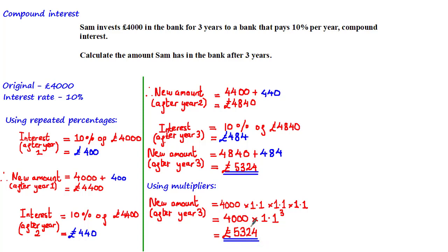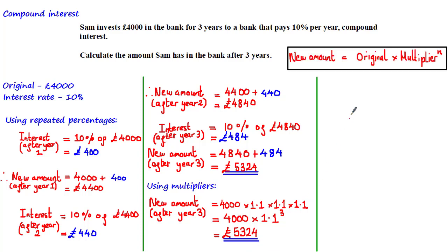By multiplying the original amount by the multiplier raised to a power equal to the number of years, we solved the problem in a single calculation. The general formula is: new amount = original amount × multiplier^n, where n is the number of periods. Be careful — n is not always equal to the number of years, as we'll see later.